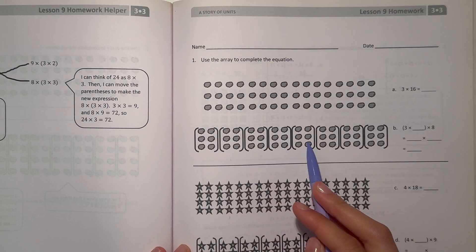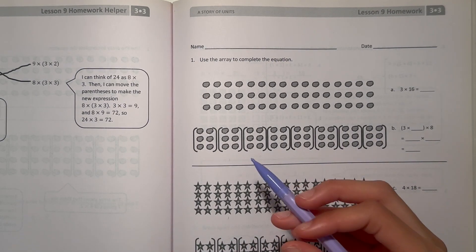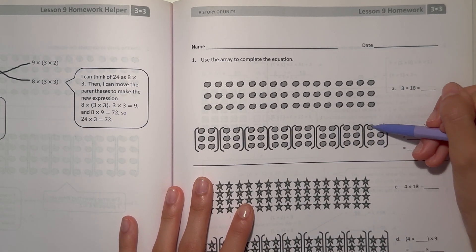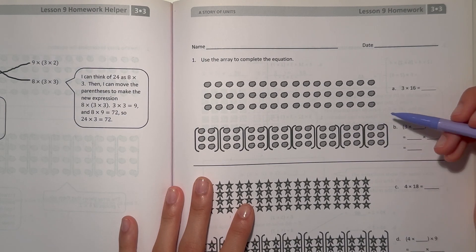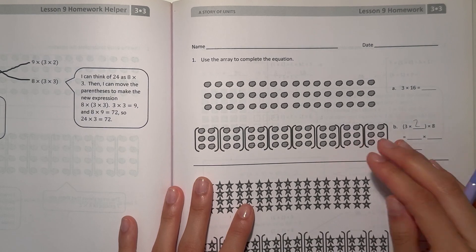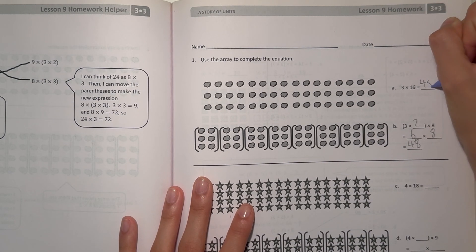So what they did here was take 3 times 16 and break it apart into 8 groups. [Counts 1, 2, 3, 4, 5, 6, 7, 8 groups]. They have 8 groups, and each group is 3 times 2, which is 6. So 3 times 2 times the 8 groups equals 6 times 8, which is 48. Which means 3 times 16 is 48.